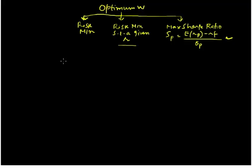To proceed forward, we will use matrices and matrix differentiation to maximize the Sharpe ratio with respect to weights. We use matrices because it is going to be easier to express the weights and returns of many assets as vectors. In later videos, we are going to use Excel to optimize the portfolio. But for now, we focus on the theory and the mechanism.